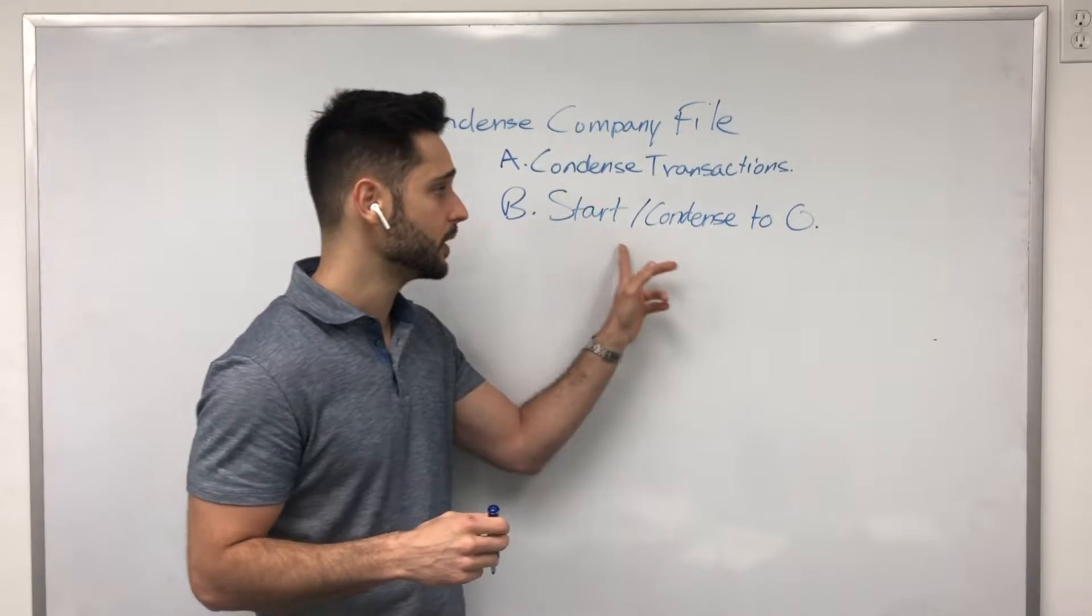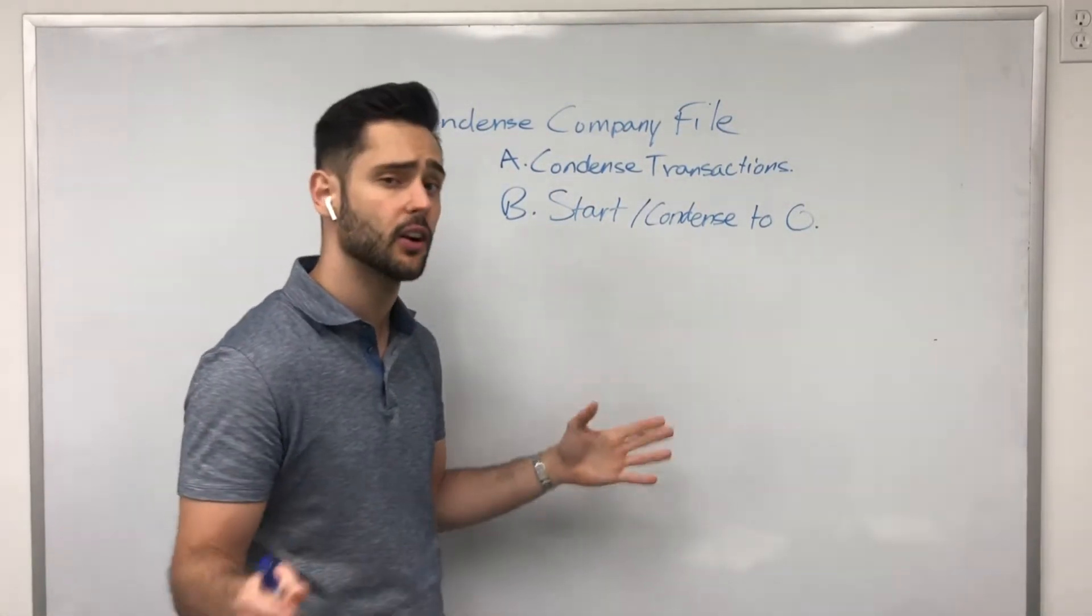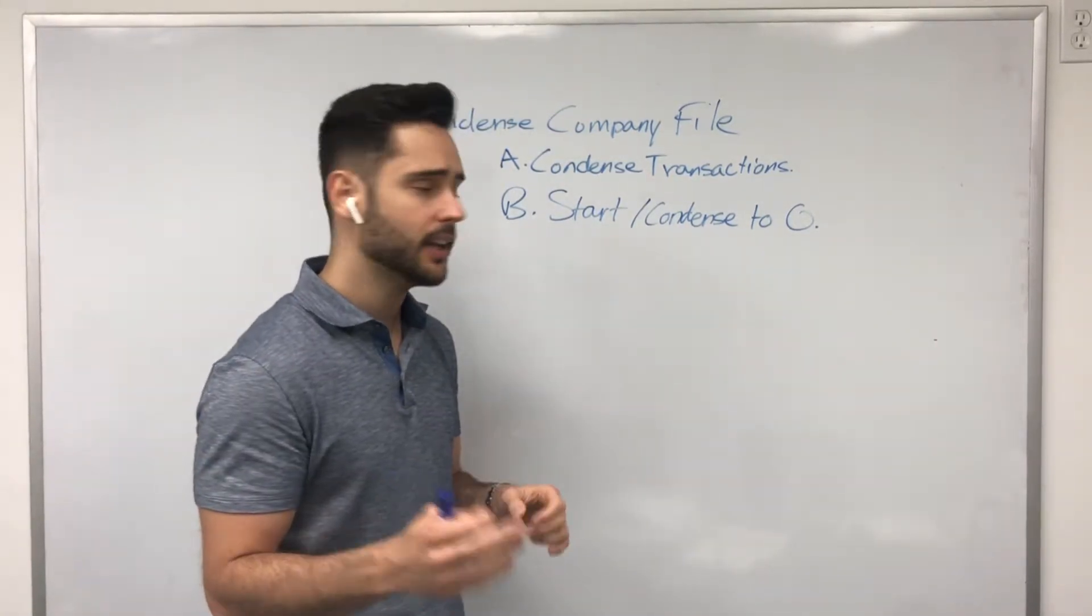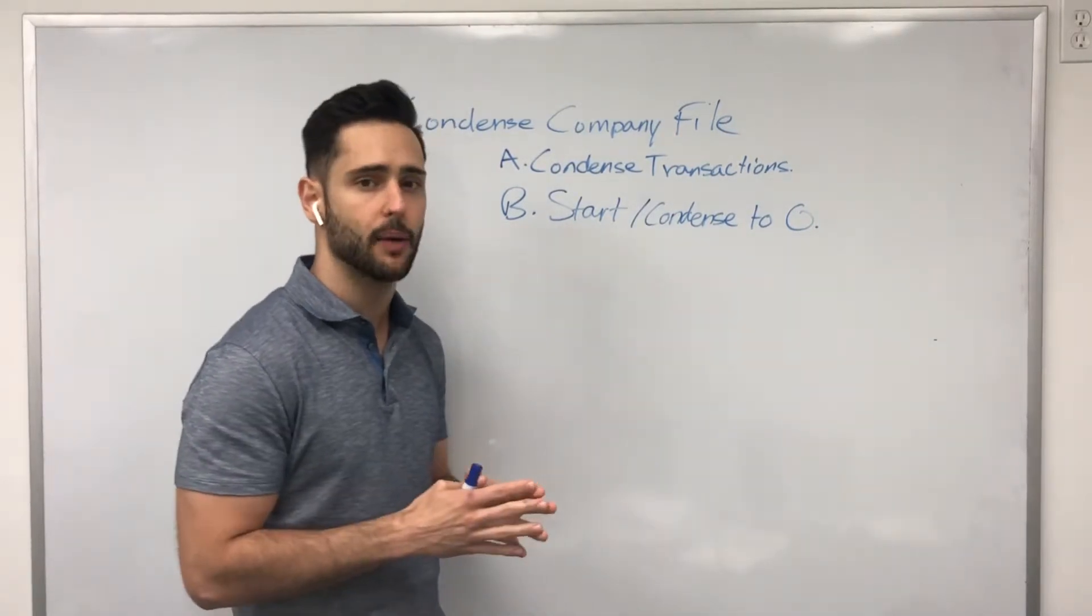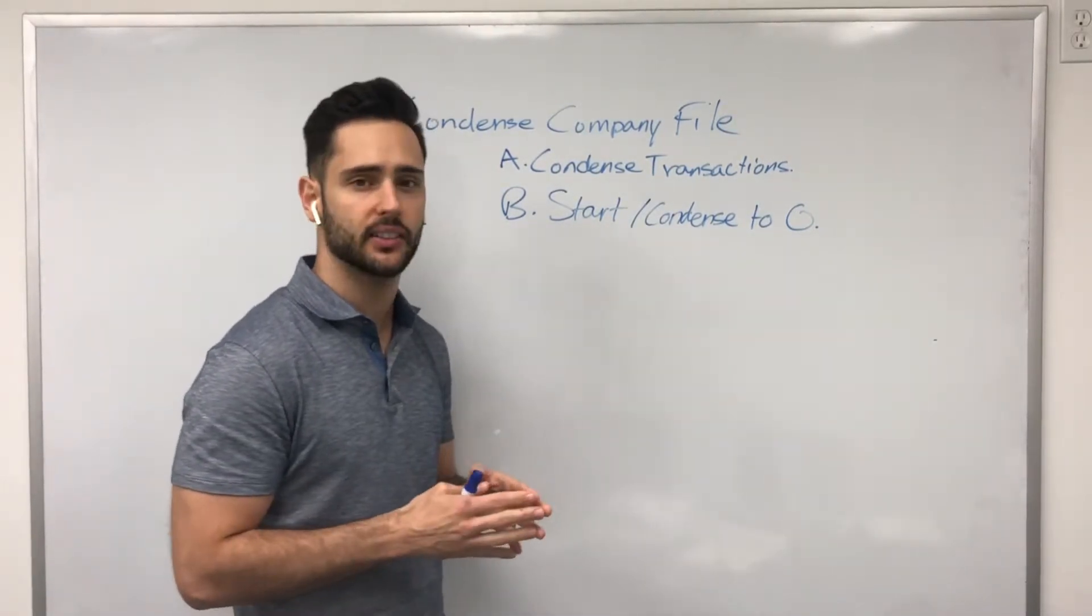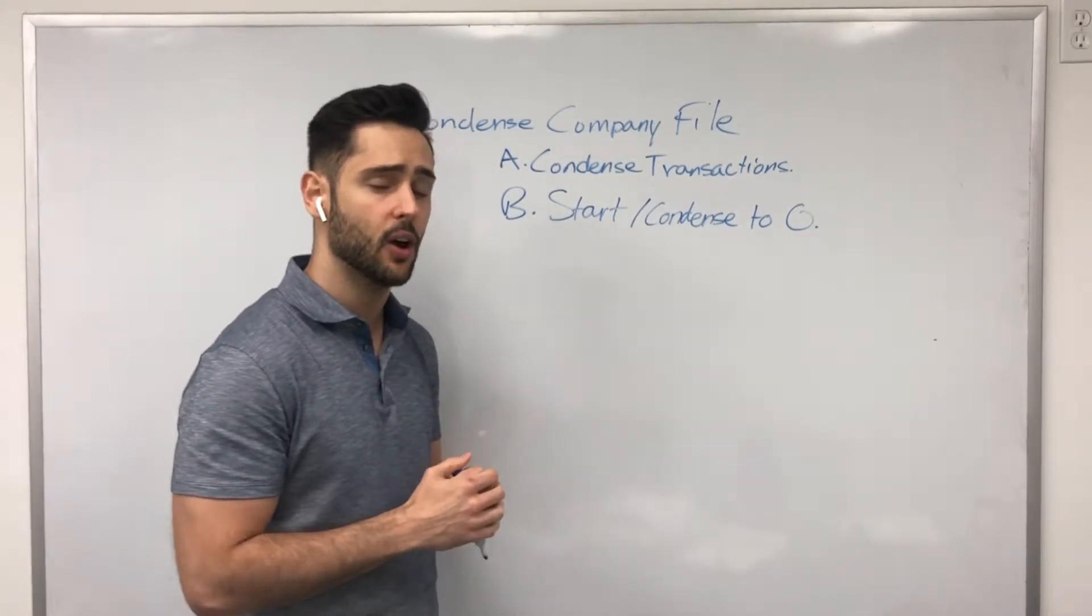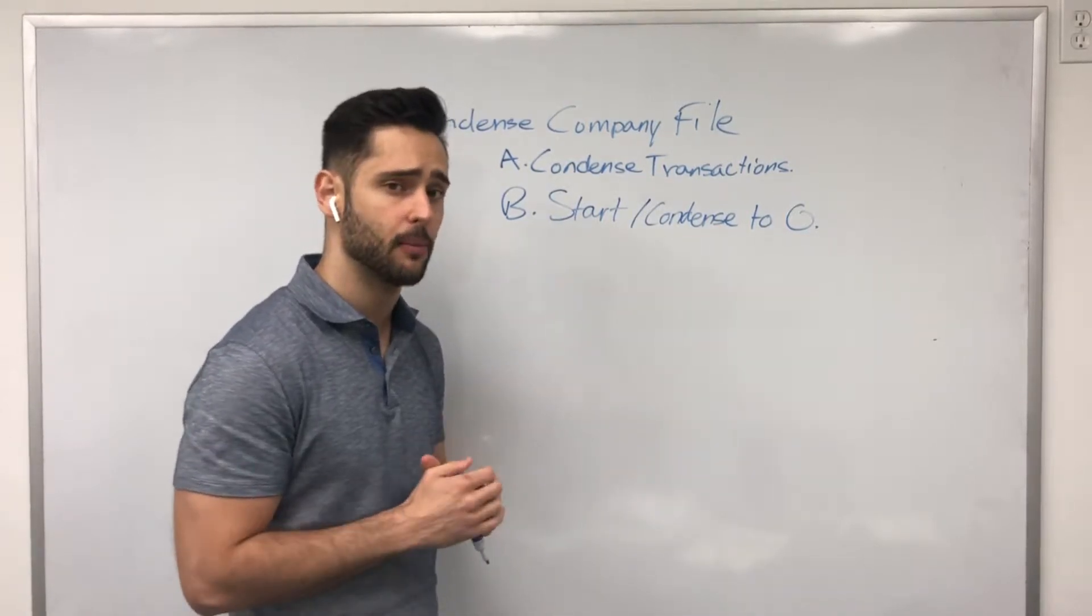Now, pros and cons. When you condense to zero and you eliminate all your details, the pros obviously is that your company file at that point is as small as it can be. The con is that you are basically removing all the account balances. So, you have no balances to go off on. You're going to have to revert back to that old company file or a backup that you made beforehand in order to see what your account balances are, which is a problem.